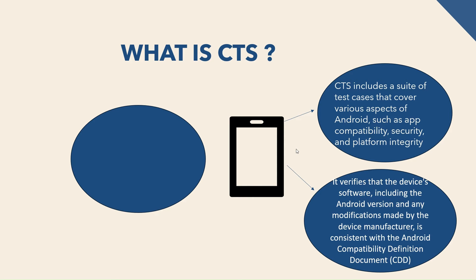CTS verifies that the device software, including the Android version and any modifications made by the device manufacturer, is consistent with the Android Compatibility Definition Document defined by Google. As a manufacturer, if I write some customizable code on my Android device, I need to make sure whatever code I write is compatible with what Google has defined, and that code will not break previous features. The version, software, hardware all must match, and it should not break security or integrity — that's why there are hundreds and thousands of test cases in CTS which must all be passed in order to release the software as a device manufacturer.